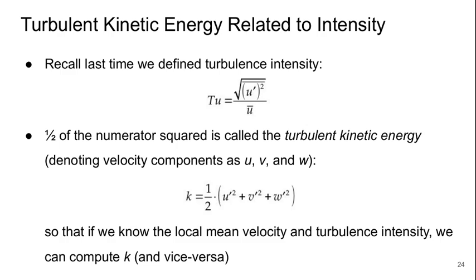The turbulence kinetic energy is related to the intensity of the turbulence. Last time we defined the turbulence intensity to be Tu equals the square root of u prime squared bar over u bar. And if we take half of the numerator squared, this is called the turbulent kinetic energy, so k equals one-half times u prime squared plus v prime squared plus w prime squared. So that if we know the local mean velocity and the turbulence intensity we can compute k and vice versa.